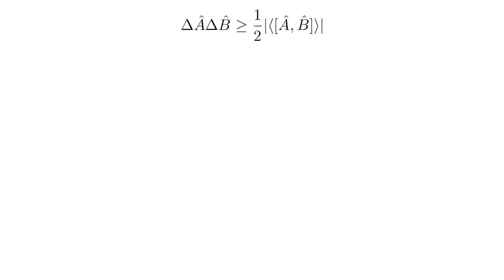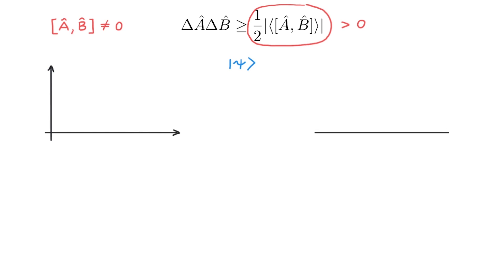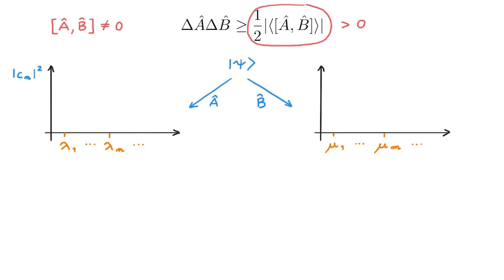So what does the Heisenberg uncertainty principle mean? Let's start with the case when A and B don't commute. This means that the right-hand side is larger than zero, so the product of delta A and delta B is strictly larger than zero. We consider our system in some state psi and represent it with two pairs of axes — in the first we represent psi in the basis of eigenstates of A with eigenvalues lambda and coefficients C, and in the second we represent psi in the eigenstates of B with eigenvalues mu and coefficients D. Starting with the A basis, imagine the distribution is centred around a particular eigenvalue lambda_n, and the same state psi in the B basis gives a distribution centred about some eigenvalue mu_m.